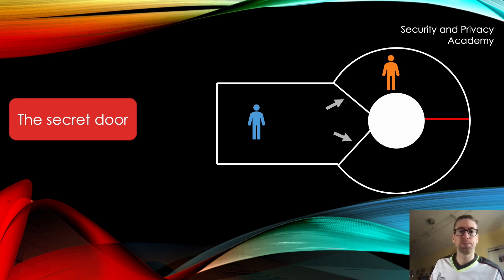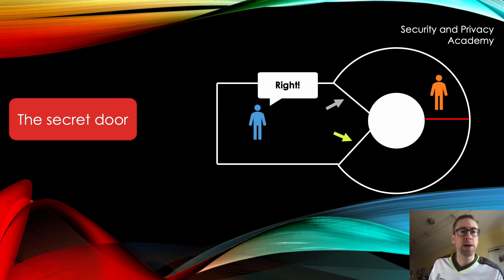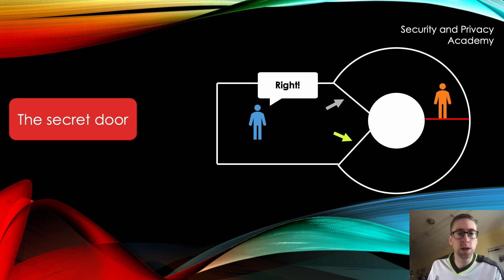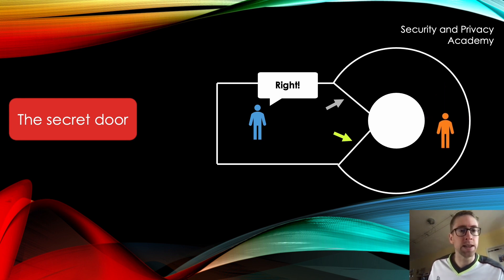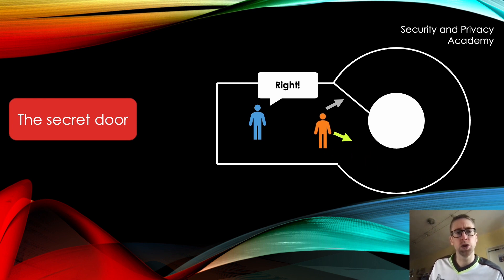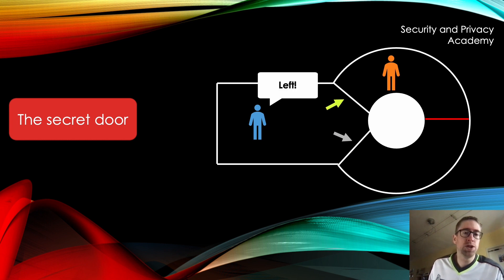Let's assume Bob shouts right. Then Alice has to exit through the right door. In order to do that she needs to pass the secret door, and to pass it she needs to know a secret — like a password — which she doesn't want to reveal. Luckily she knows the secret and can exit through the requested door. If Bob had shouted left, she simply exits where she came from and doesn't need to prove anything.